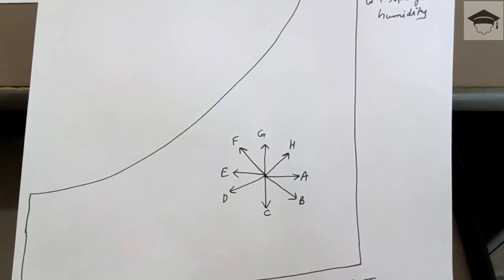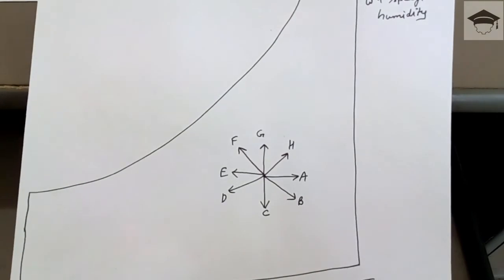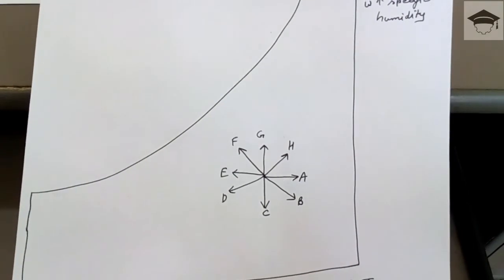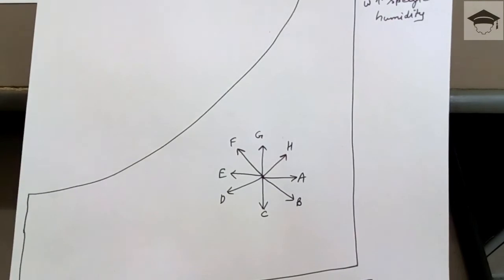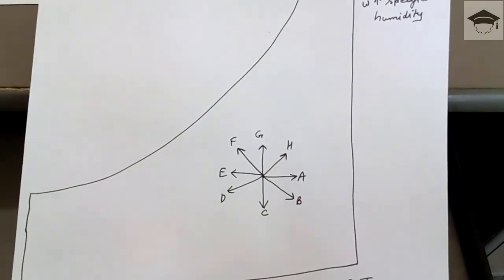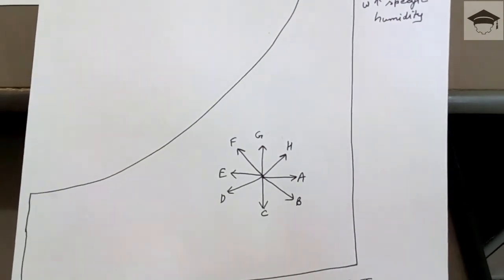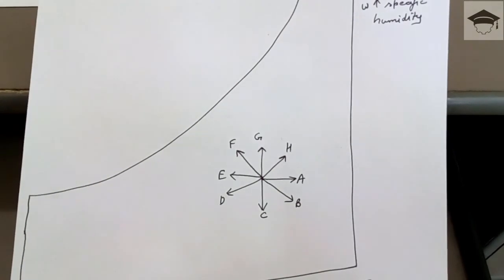In Process F, the temperature decreases while the specific humidity increases, so it is known as humidification with cooling. In Process H, the humidity increases and the dry bulb temperature also increases, so it is known as humidification with heating.